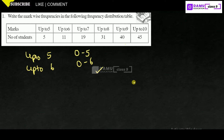Up to 5 means students who got 4 marks, 3 marks — all are included in the up to 5 mark count. Up to 6 means students who got 0, 1, 2, 3, 4, or 5 marks are also included in the up to 6 mark count. That is the meaning of cumulative frequency.